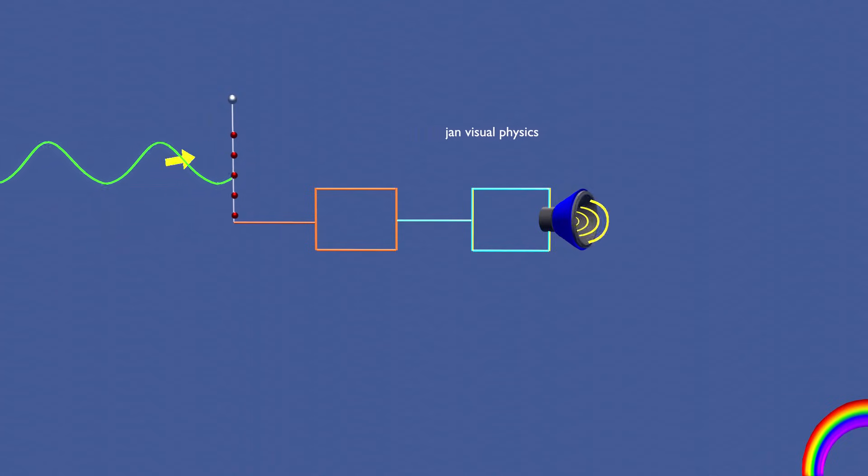As the field alternates, the electrons begin to oscillate collectively. This movement of charge constitutes a small alternating current in the antenna, producing an alternating voltage across its terminals. The frequency of this induced voltage is exactly the same as that of the incoming EM wave.